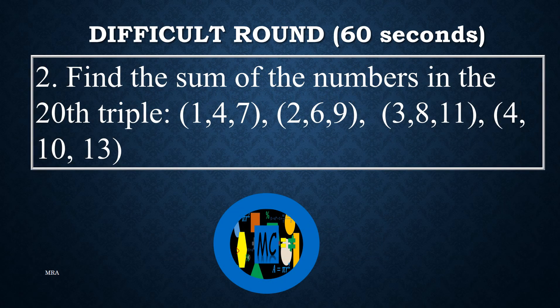Problem 2: Find the sum of the numbers in the 20th triple. The sequence is: 1, 4, 7, 2, 6, 9, 3, 8, 11, 4, 10, 13.